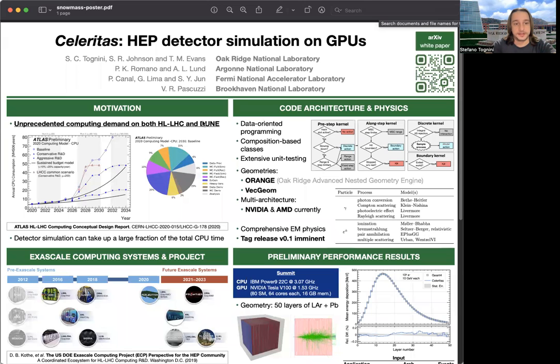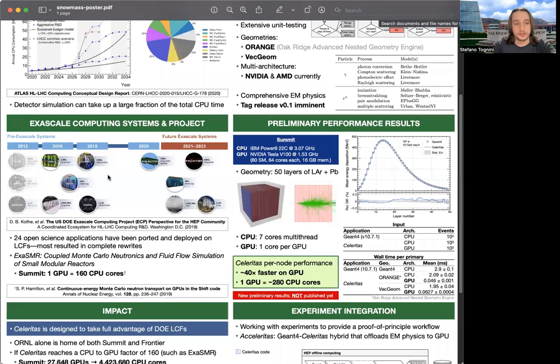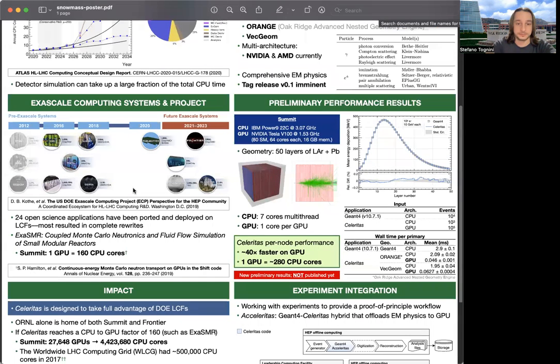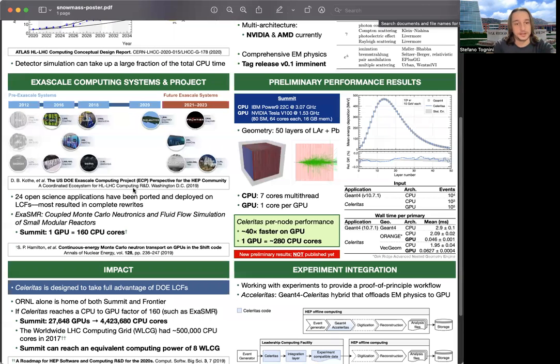Our motivation comes from the fact that within the next decade, experiments will need an unprecedented amount of computing power, possibly needing more resources than the total amount of existing ones. One way of helping is to use the network of supercomputers that DOE has been developing over the past many years, but for that we need to be able to integrate them with high-energy physics experimental workflows, and we hope that Celeritas can be one step in the right direction in that sense.